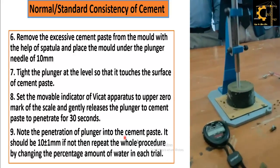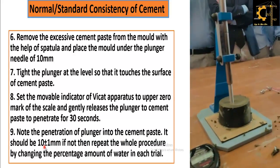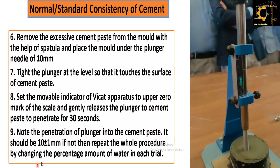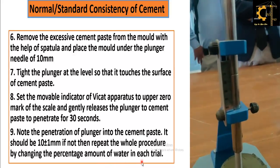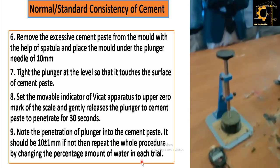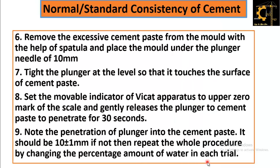Note the penetration of the plunger into the cement paste — it should be 10 ± 1 mm. If not, repeat the whole procedure by changing the percentage of water in each trial. The water percentage ranges from 26 percent to 33 percent. If penetration is low, increase the amount of water; if penetration is high, decrease the amount of water by 1 or 2 percent.